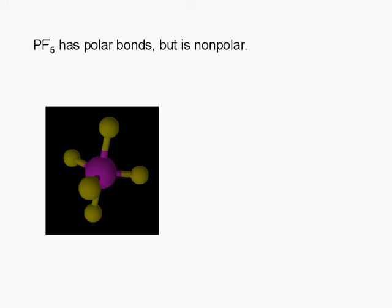Here's a model of the phosphorus pentafluoride molecule. It is trigonal bipyramidal. All the phosphorus fluorine bonds are polar, but because of the symmetrical orientation, the molecule is nonpolar.